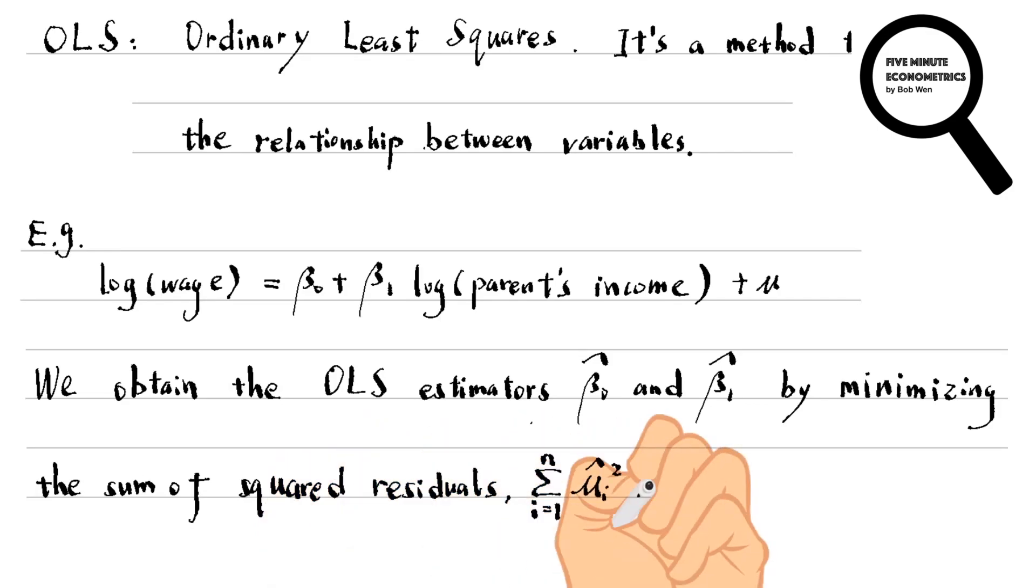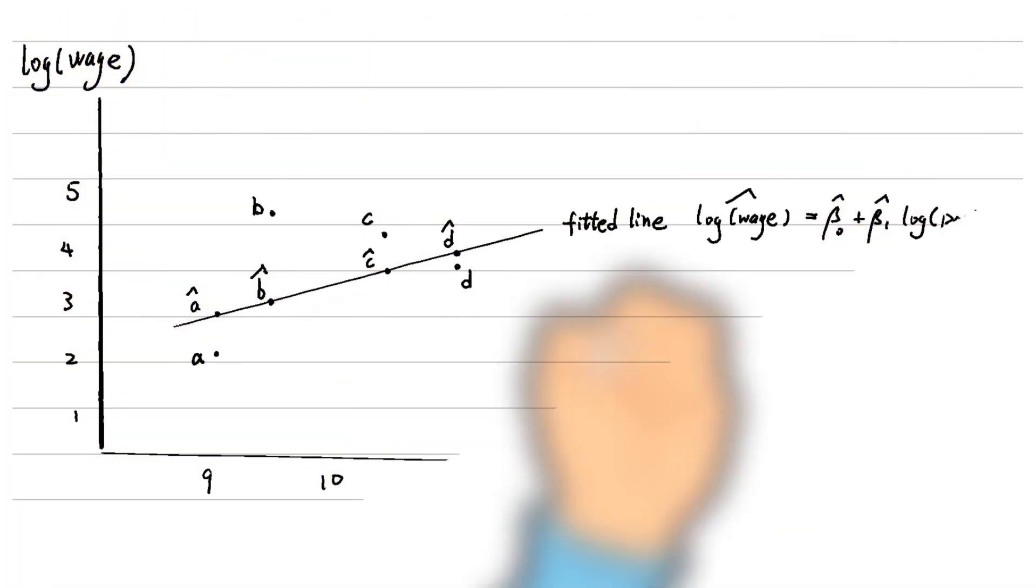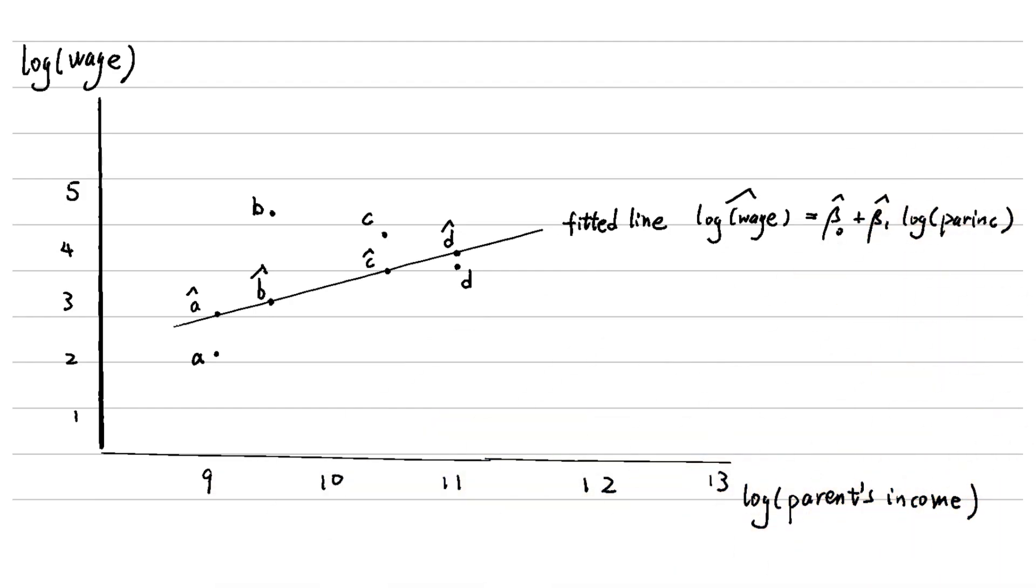What are the residuals? It is better to illustrate it in the graph. Point A represents the actual value of the log wage we observed when the log parent income equals 9. Point A hat represents the fitted value when the log parent income equals 9. It is on the fitted line.